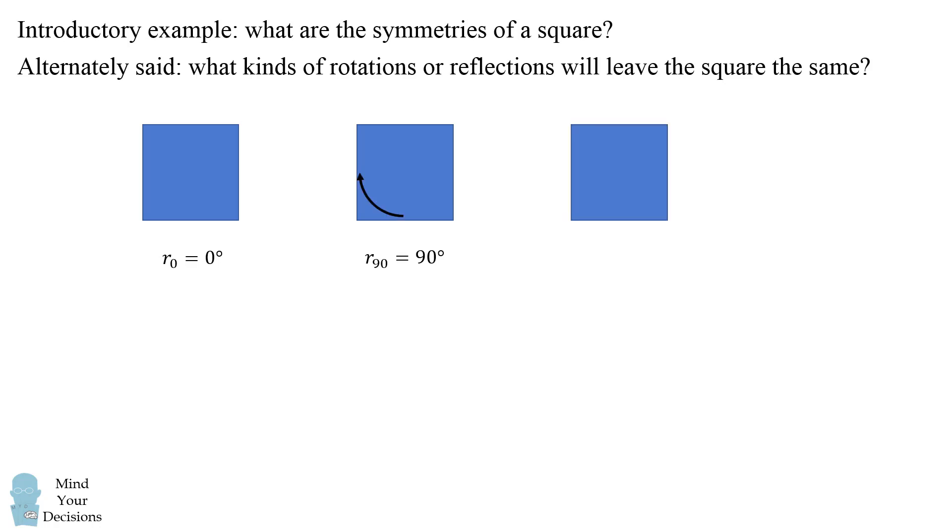Another symmetry is if we rotate the square by 180 degrees. Another rotation is if we rotate the square by 270 degrees. Now if we go one more, 360 degrees, that's the same thing as a 0 degree rotation. So here are the four rotations which will leave the square exactly the same as we started.